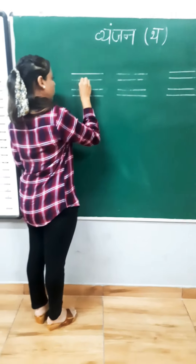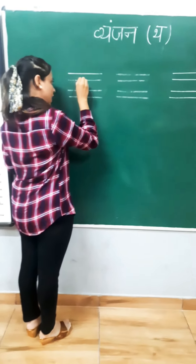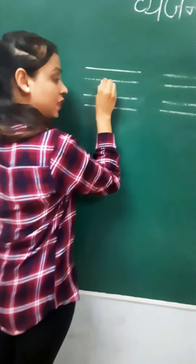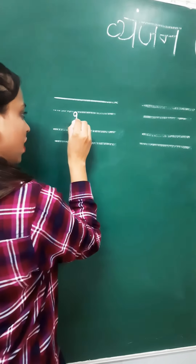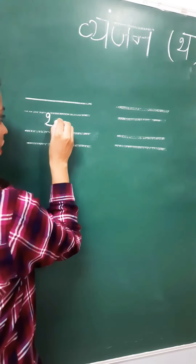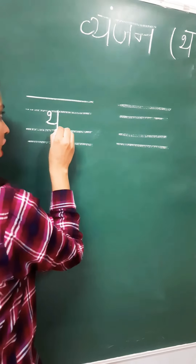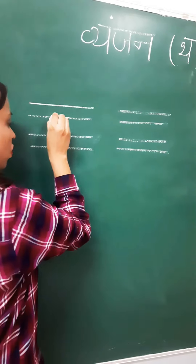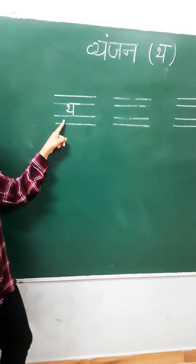For Vengen Tha, we will start from the second line, make a small loop like this. Then a curve, another curve, and the standing line. That is how you have to make Vengen Tha.